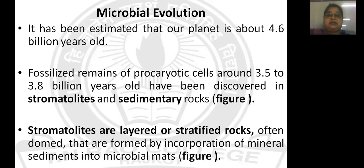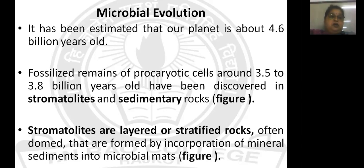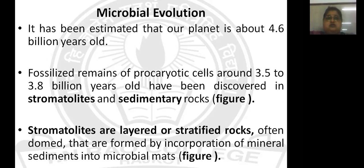It has been estimated that our planet is near about 4.6 billion years old. The fossils from prokaryotic cells are found to be 3.5 to 3.8 billion years old. That means immediately after about 2 billion years, the first life form originated on planet Earth after its formation. The current fossilized prokaryotic cells are found in the form of stromatolites and sedimentary rock.